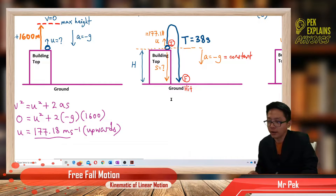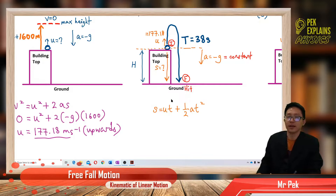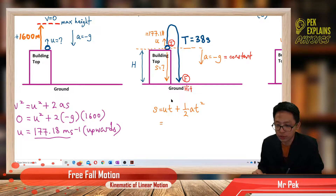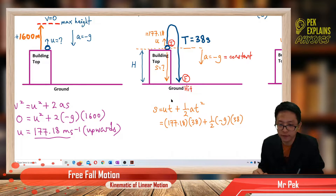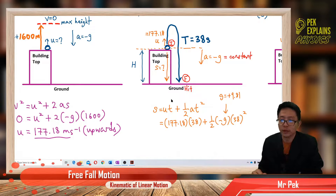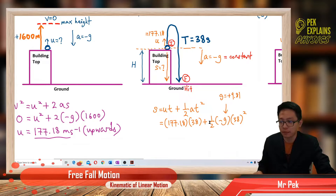Using s = ut + ½at²: the initial speed is 177.18, the total time taken is 38 seconds, and a is negative g. We substitute g = positive 9.81 — g itself is positive; only the acceleration a is negative g. The negative sign is maintained outside.